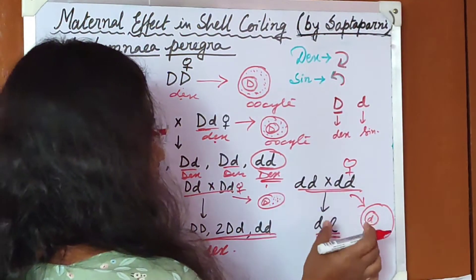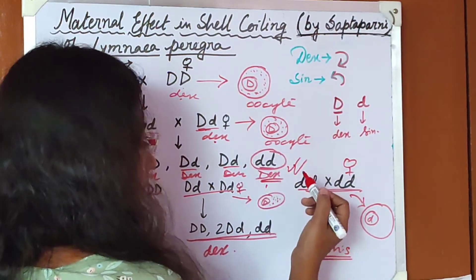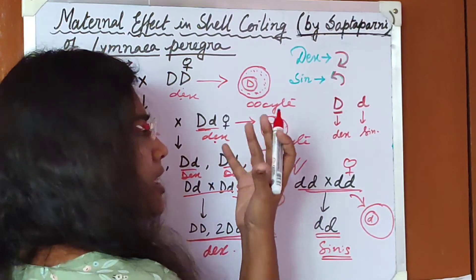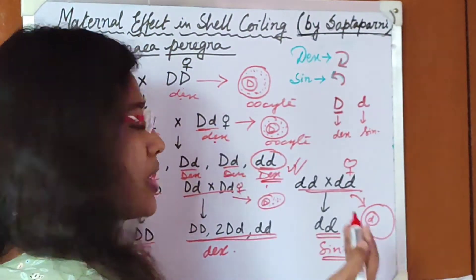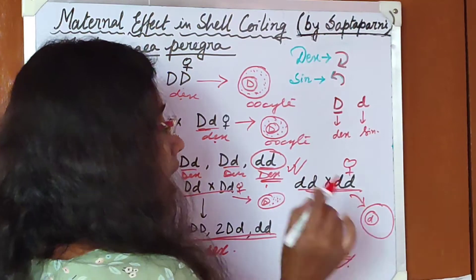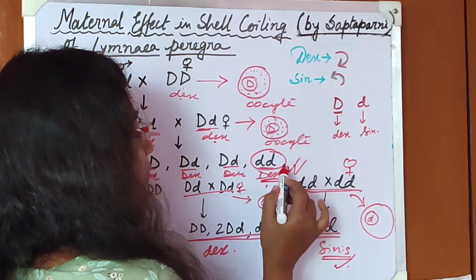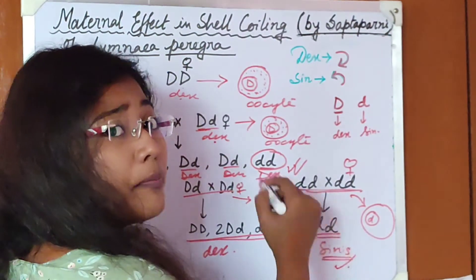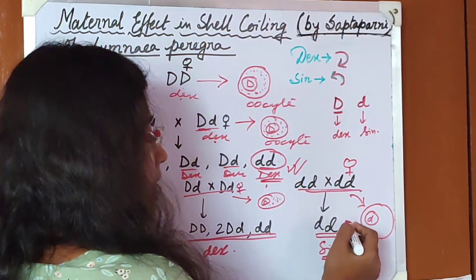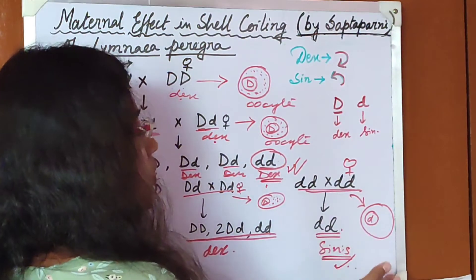The small d small d progeny that showed dextral phenotype — that phenotype was determined by its mother's genotype. Its own small d small d genotype was suppressed, and it can only be expressed in the next generation. This is known as the delayed effect. Why delayed? Because it cannot produce its phenotype according to its genotype in its own lifetime, but it can produce the same genotype and same phenotype in its next generation — it is delayed.